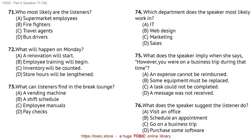Questions 71 through 73 refer to the following excerpt from a meeting. I just have a quick announcement to make before we finish up. We're expecting a lot of shoppers here next week who are picking up last-minute groceries for the holidays. Starting on Monday, we'll be extending our store hours until 10 p.m. We need cashiers and stock personnel to work extra hours all next week, so you'll have a chance to make some overtime pay. If you're available, please put your name on the schedule hanging in the break lounge. Number 71. Who most likely are the listeners? Number 72. What will happen on Monday? Number 73. What can listeners find in the break lounge?